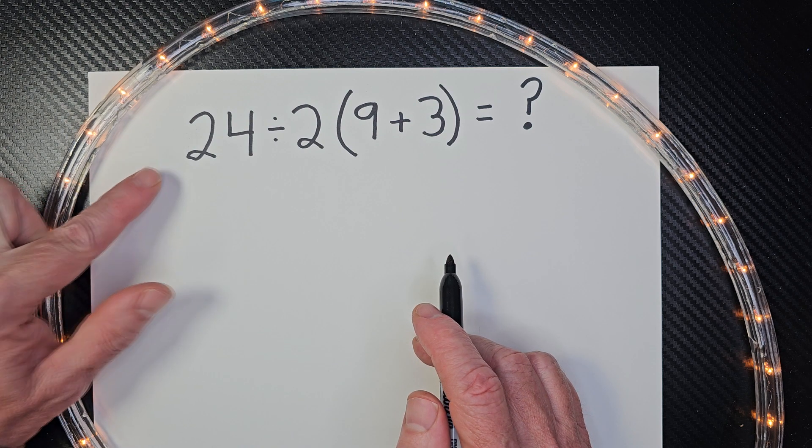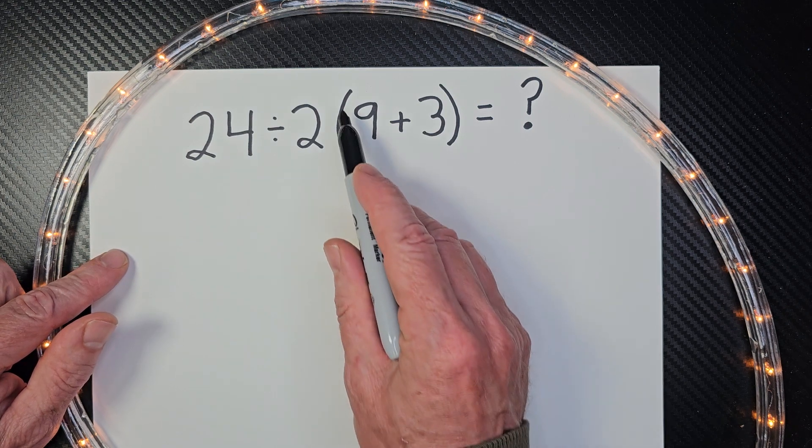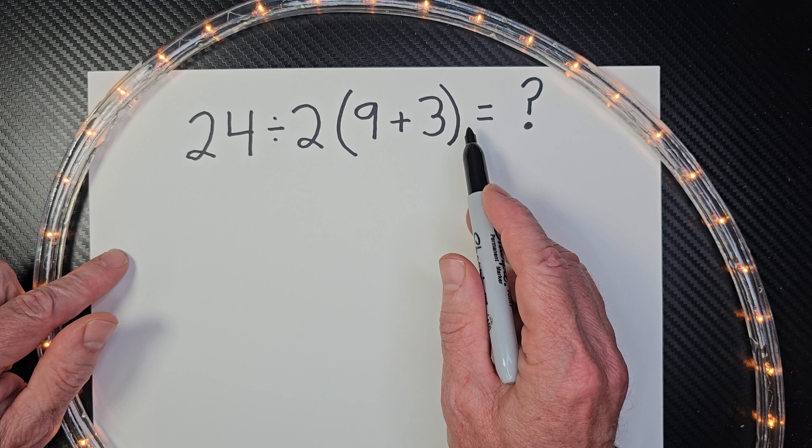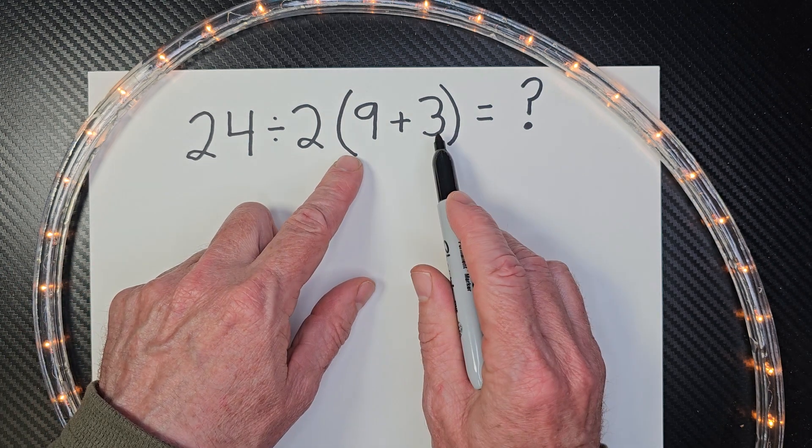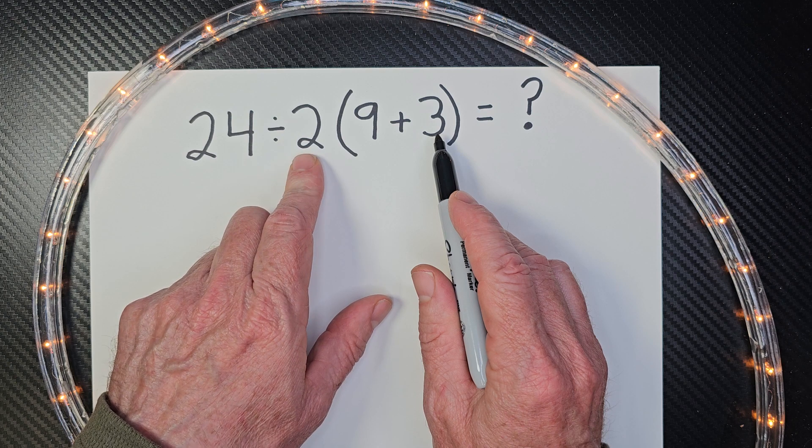We have 24 divided by 2 and then 9 plus 3. These parentheses right here mean that whatever number is going to be here, we're going to have to multiply it by the 2.